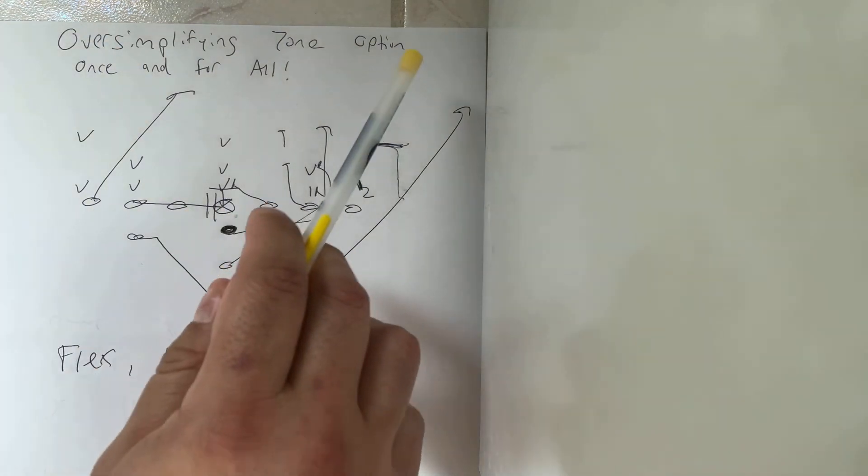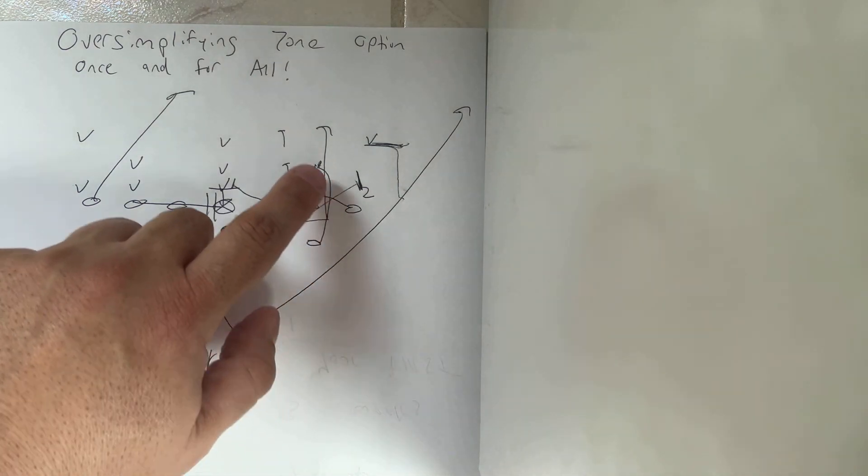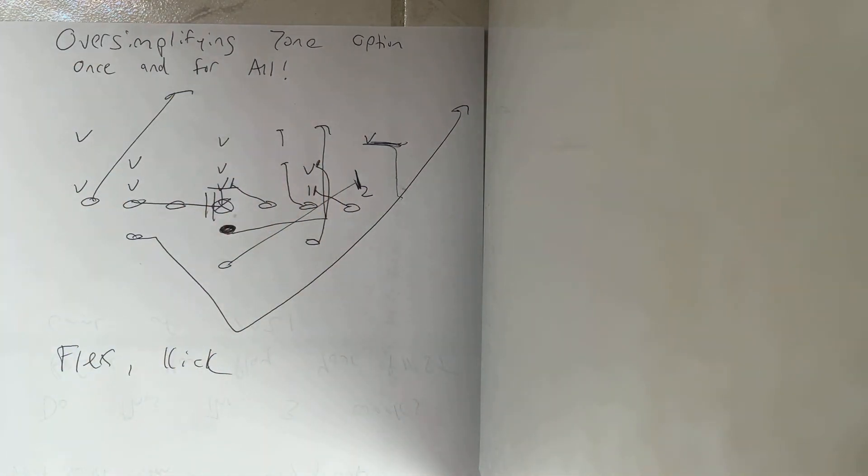So, if you want to oversimplify zone option once and for all, that's how you do it. You get into flex, you concede to running the kick, and then receiver's got the C gap, tackle's got the B gap, guard and center have the play side A gap. Backside's got the backside A, backside B. And you just kick the guy off the receiver and run in the alley. And there you go. And then he becomes the load player. So that's that.